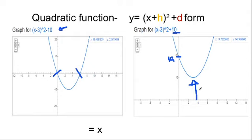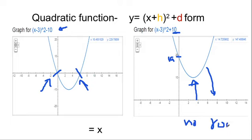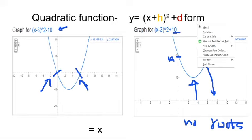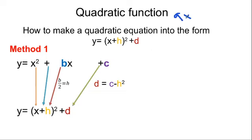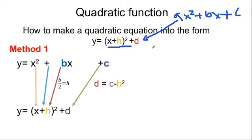Now we know how the function behaves when the sign of d changes. Usually you are given the general form ax squared plus bx plus c, so in order to find the turning point, you have to turn this into the completing square form. The simplest case is when the coefficient of x squared is 1. There are two methods to perform this, and the first method is the easiest and fastest way.